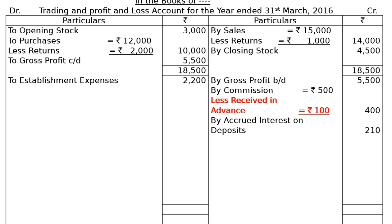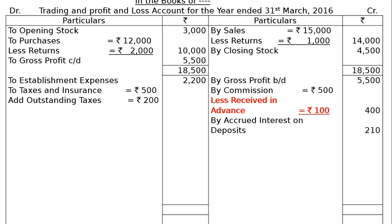Come down to the debit side of the Profit and Loss Account and write down all office expenses: establishment expenses and business earning expenses Rs 2,200. Taxes and insurance Rs 500. As per first adjustment, taxes Rs 200 are outstanding and insurance Rs 50 is prepaid. Outstanding taxes will be added and prepaid insurance will be deducted. Add outstanding taxes Rs 200, less prepaid insurance Rs 50. In the final column we will have Rs 650.